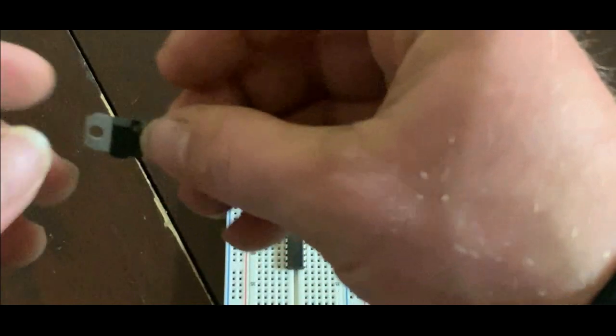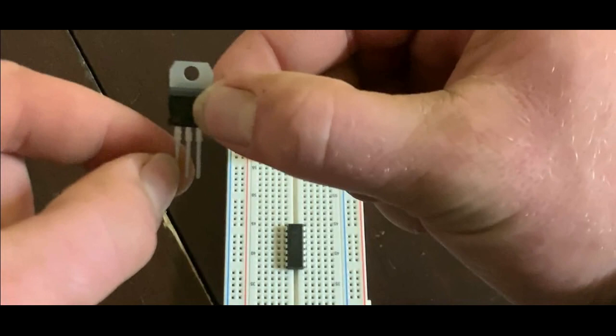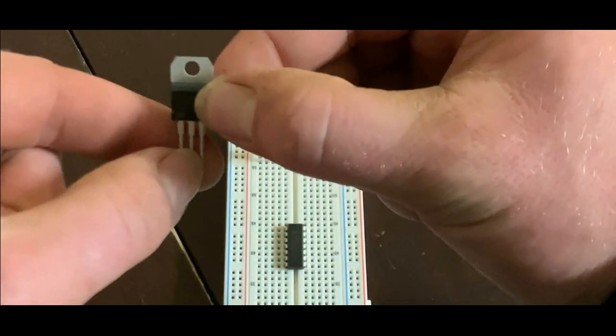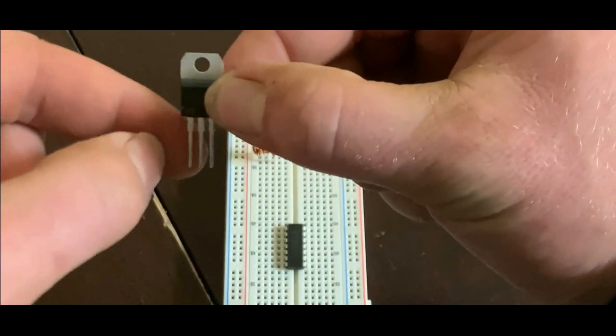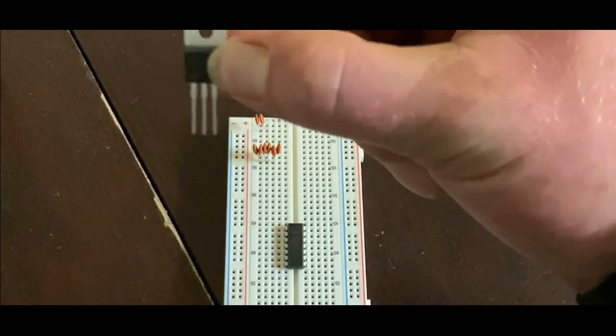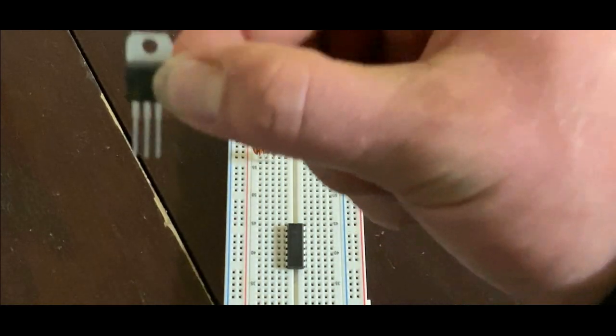Okay and on this chip if you hold it like this, this is the input, this is ground, the middle one, and that's the output voltage. It'll output 12 volts. I have 24 volts on the input. It'll hold it to 12 volts.